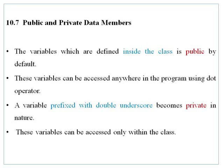A variable prefixed with a double underscore becomes private in nature. If a variable has a double underscore prefix, it is private. We can only access that particular variable within a restricted scope.